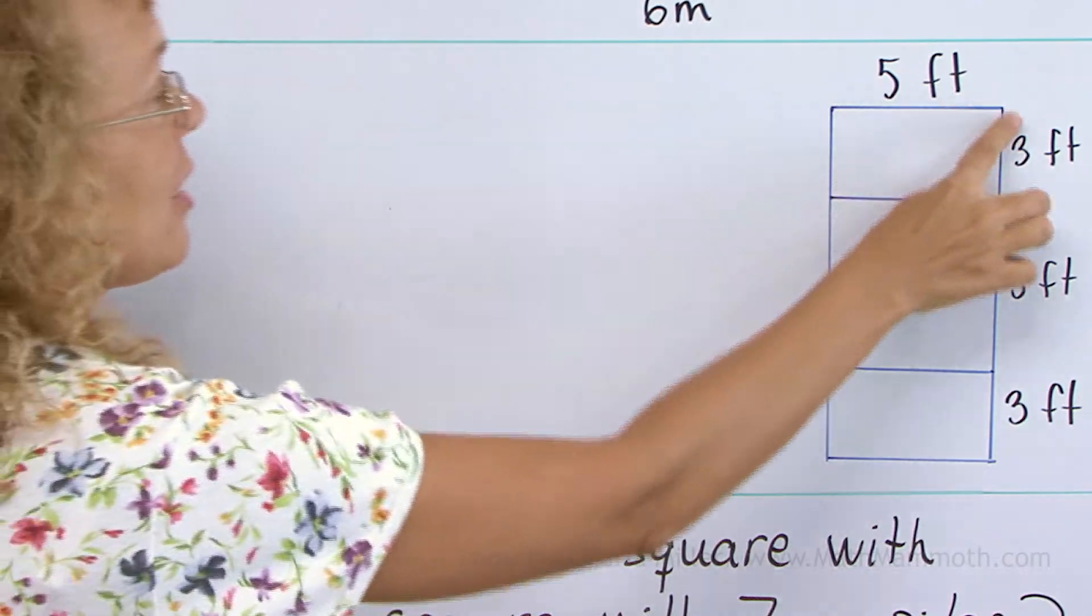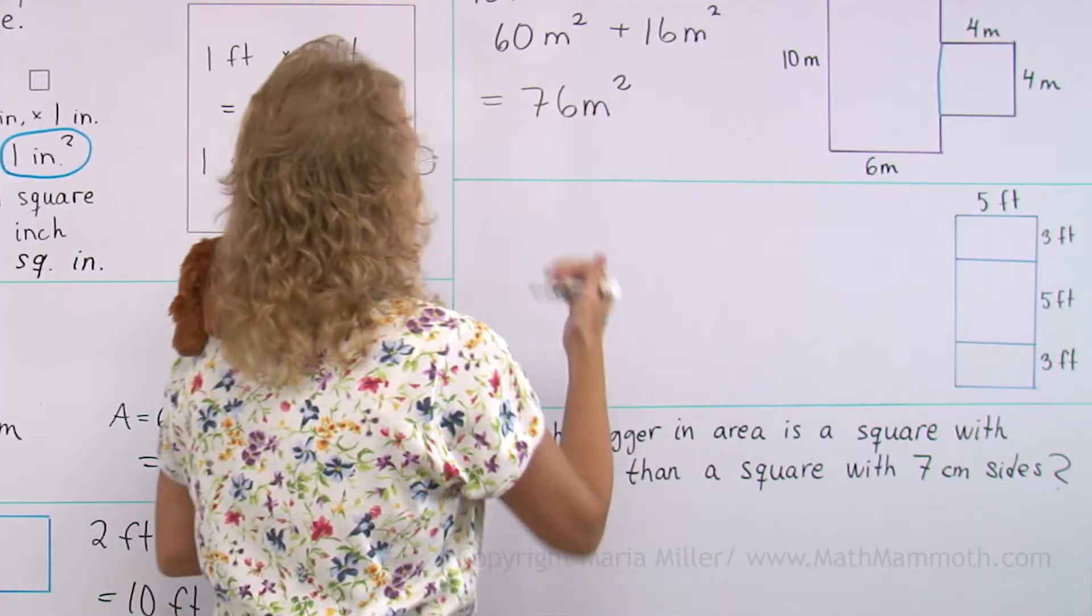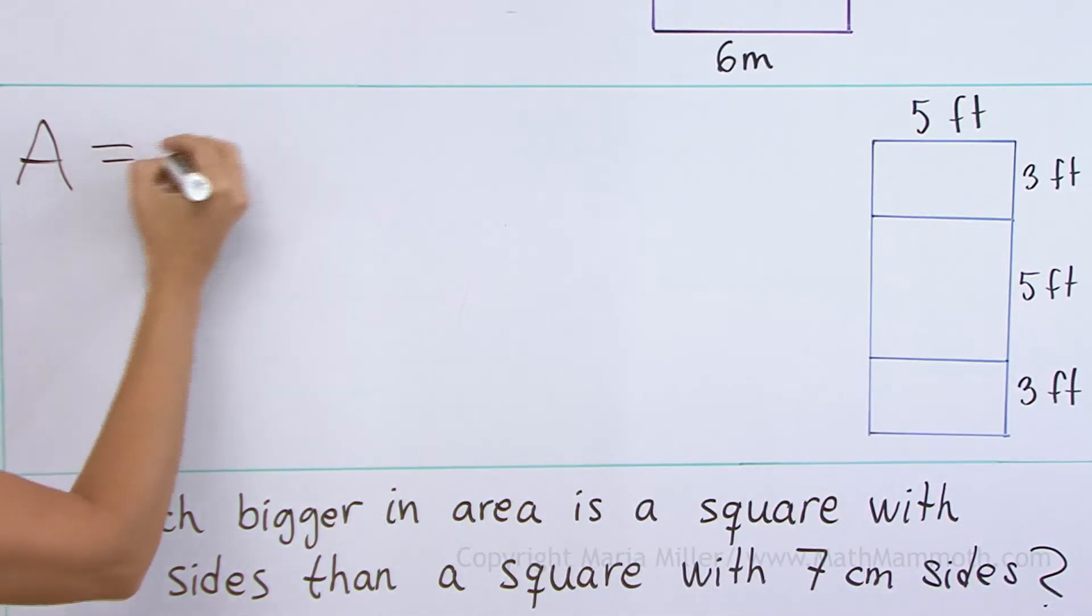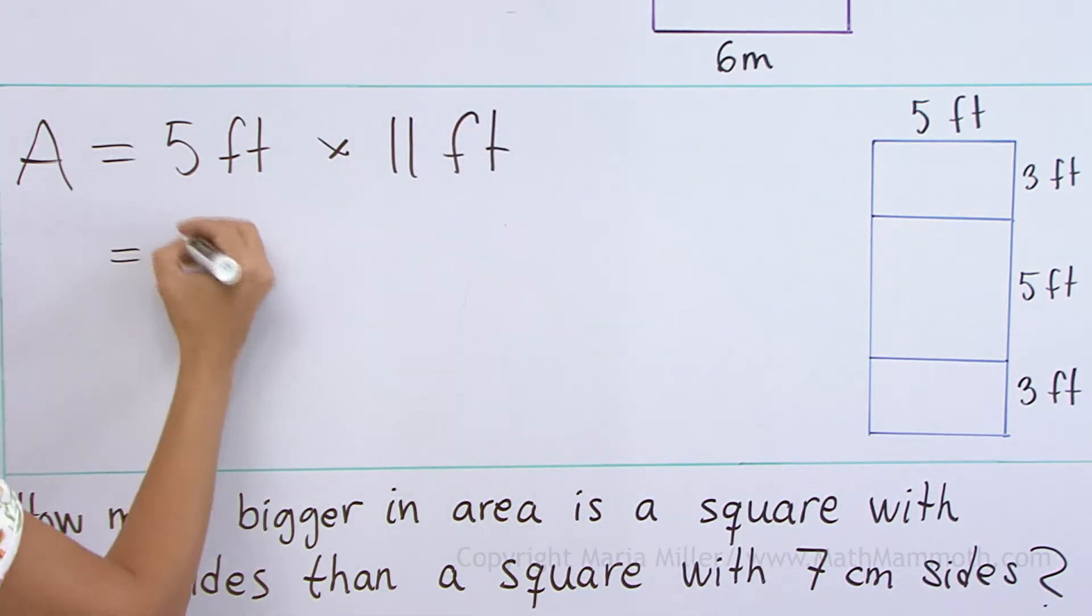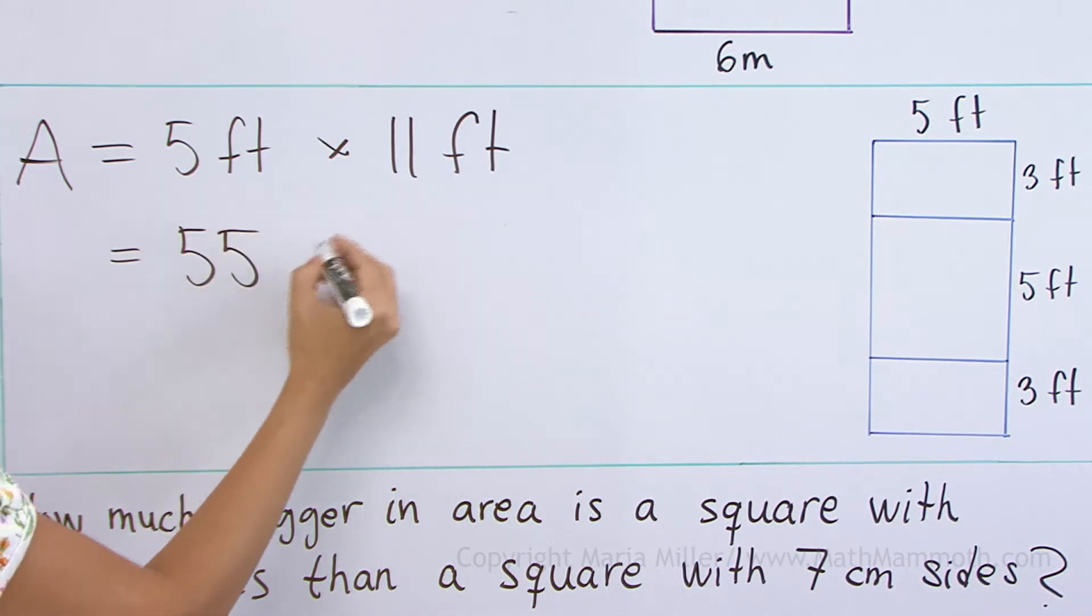That's 11 feet, right? This here is 11 feet. So then the area equals 5 feet times 11 feet. And we get 55 square feet.